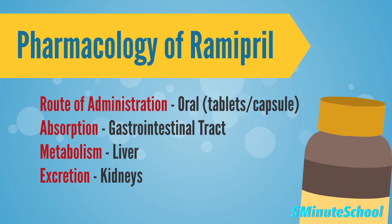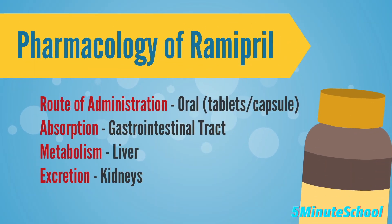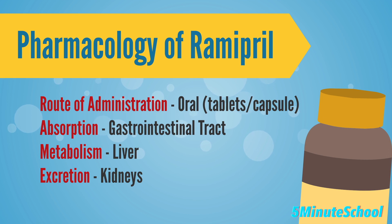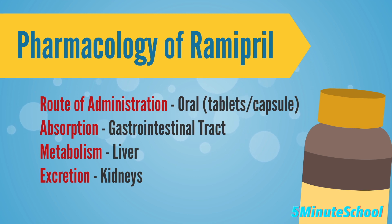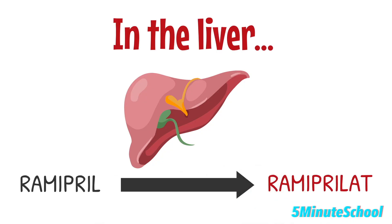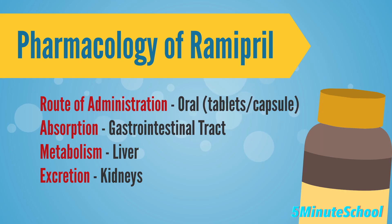In terms of the pharmacology of Ramipril, its route of administration is typically oral in the form of tablets or capsules, and the drug is well absorbed from the gastrointestinal tract. In terms of metabolism, Ramipril is converted into its active form Ramiprilat in the liver through hydrolysis. Both Ramipril and Ramiprilat are excreted primarily by the kidneys.